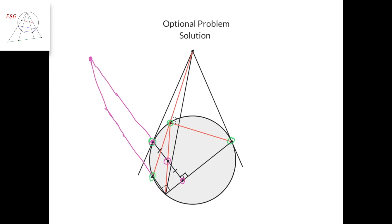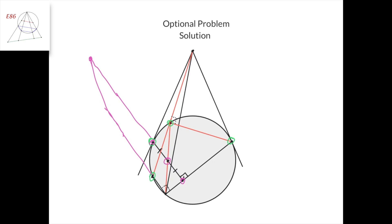This point would go to the intersection of this line and this line. Let's assume that they intersect at some finite point here. Then, because this quadrilateral was harmonic and because cross-ratio is preserved under this projection, we get that this point, this point, this point, and this point are in harmonic division.